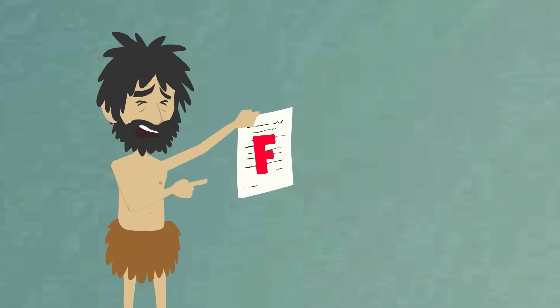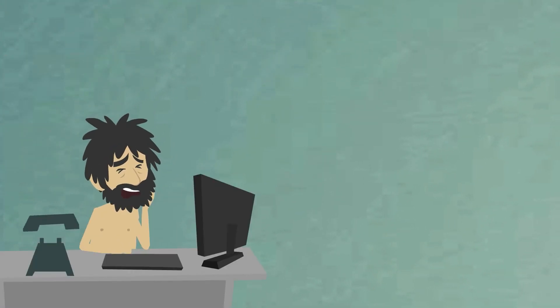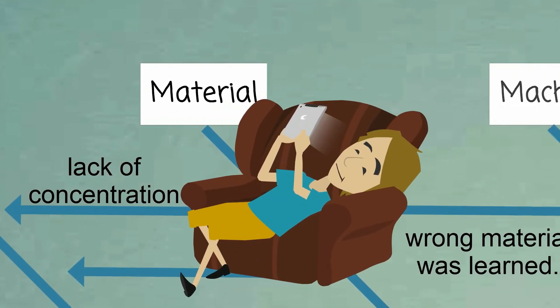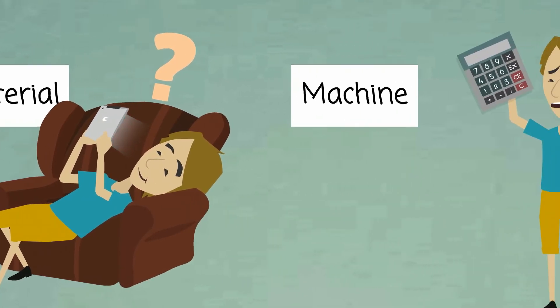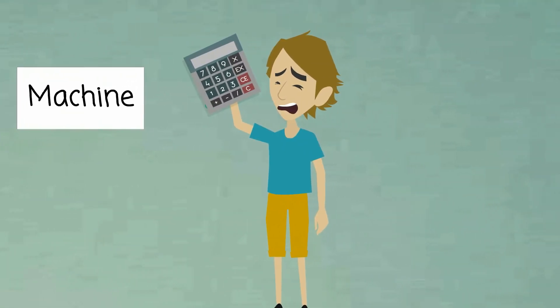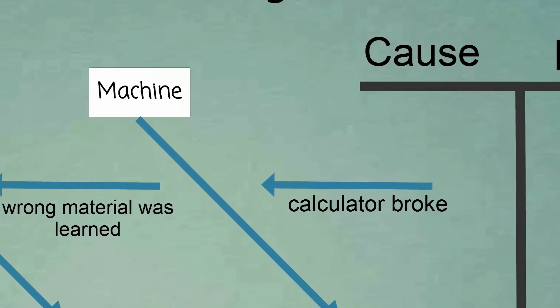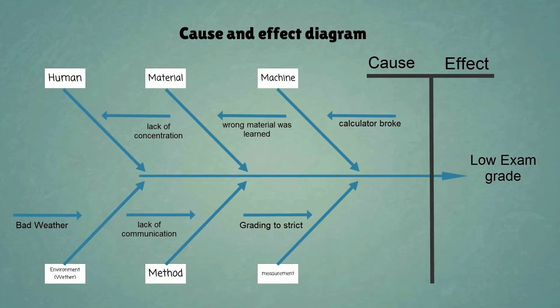For example, let's say your exam grade is very low. There are multiple reasons that might have caused this lower grade. It could be a human cause through a lack of concentration, a material cause, for example, the wrong lecture material was learned, or your calculator broke down during your finance exam, which is machine malfunctioning. The diagram gives you a clear and straightforward overview of all the possible causes to the effect or to the problem.